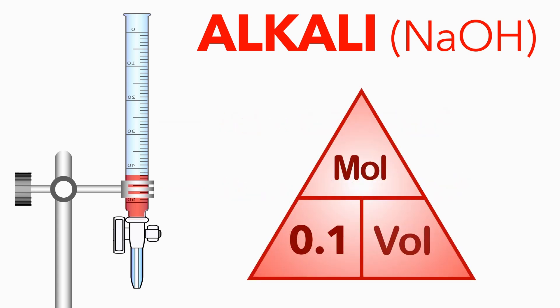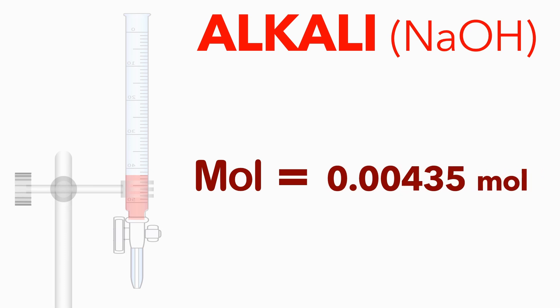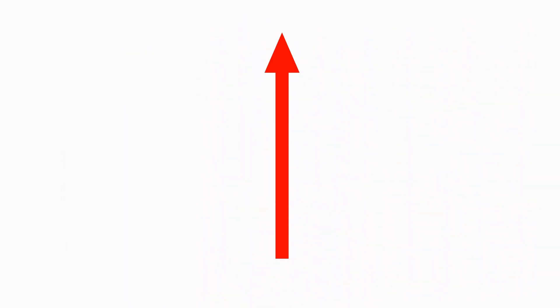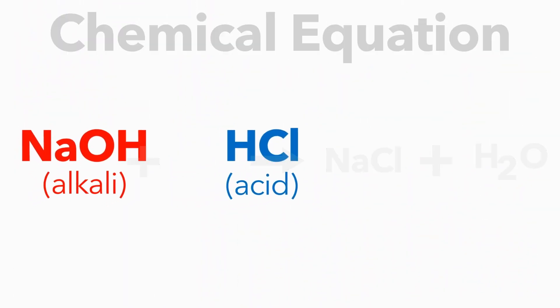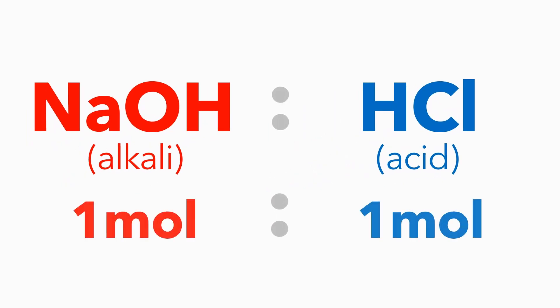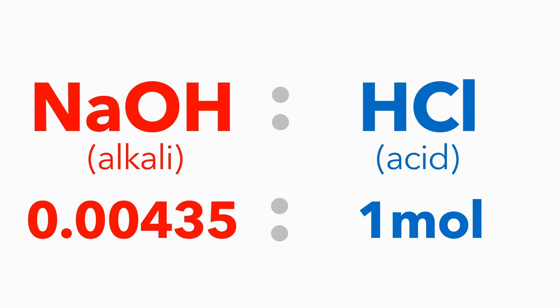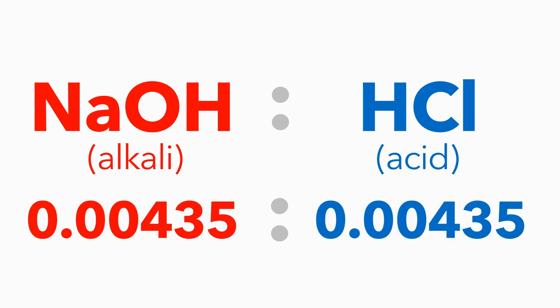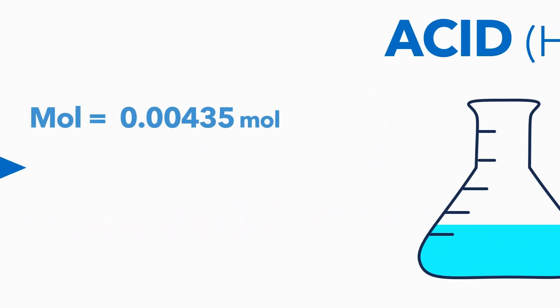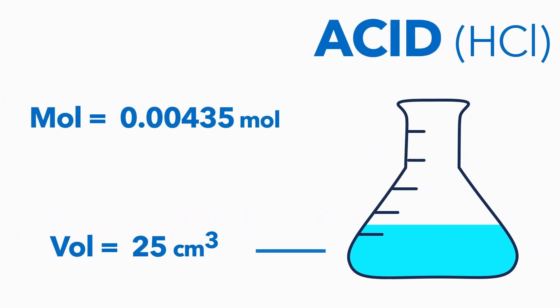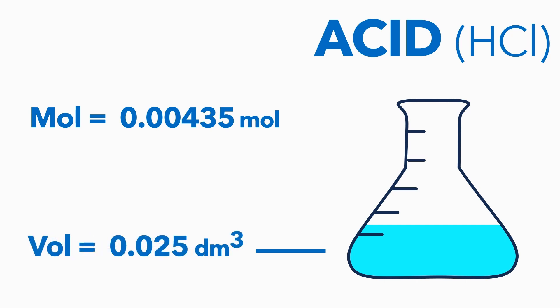So, we can calculate the number of moles of sodium hydroxide in the solution as 0.00435 moles. Now, according to the chemical equation for the reaction, exactly one mole of alkali is needed to neutralise every one mole of acid. So, there must have also been 0.00435 moles of acid in our 25cm³, or 0.025 dm³ sample.